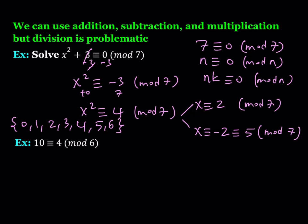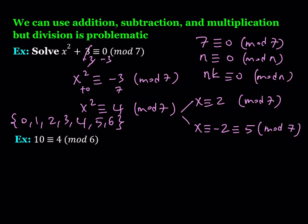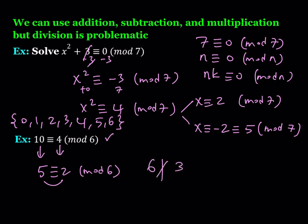Now, we said that division is problematic — let's illustrate why. Is 10 congruent to 4 mod 6? Yes, because 10 minus 4 is 6. So let's go ahead and divide both sides by 2 since 2 is a common factor. Is it true that 5 is congruent to 2 mod 6? Obviously that's not true, because 5 mod 6 can be congruent to 5, or 11, or negative 1 — but not 2. You can also check: 5 minus 2 equals 3, and 6 does not divide 3.